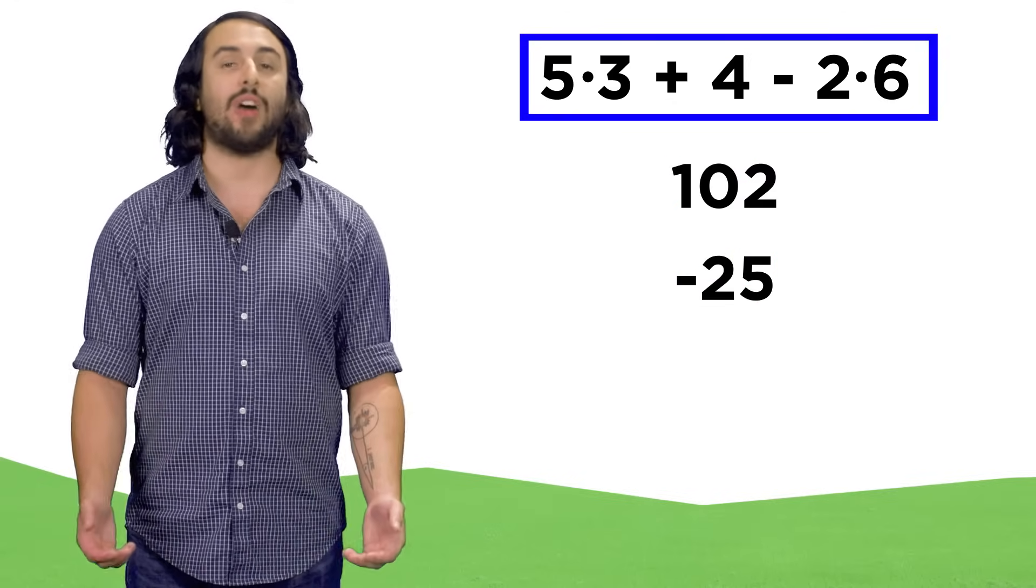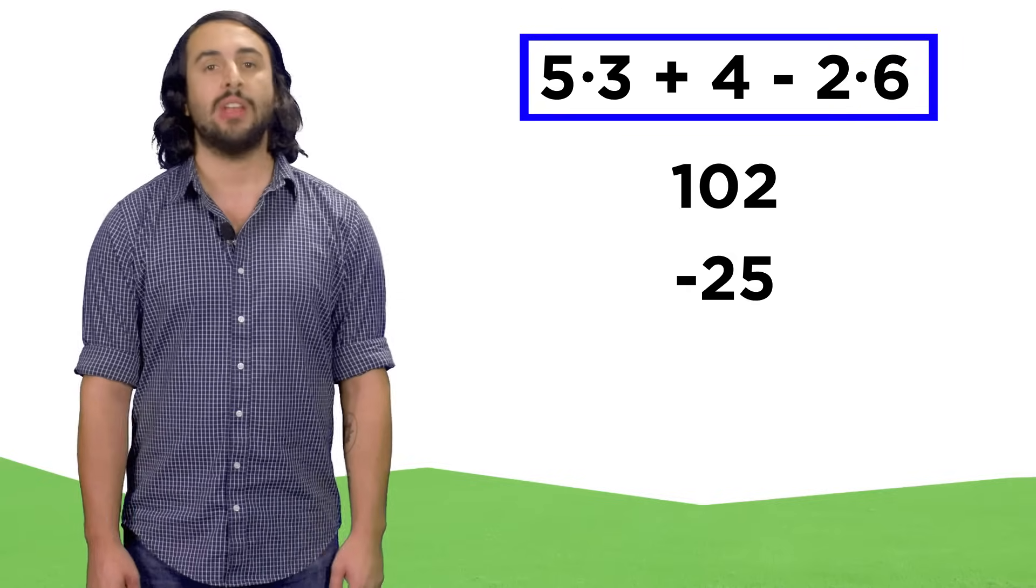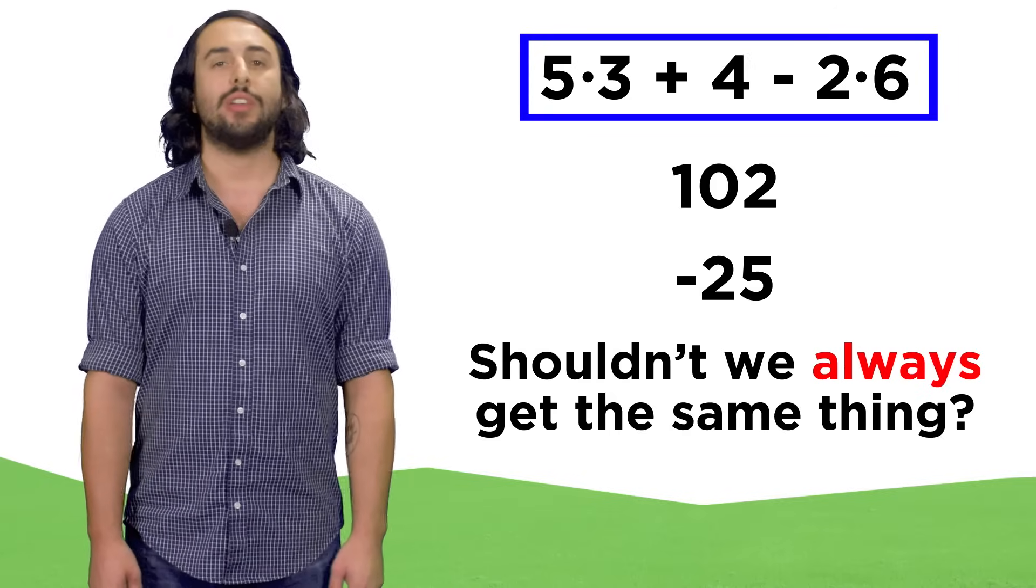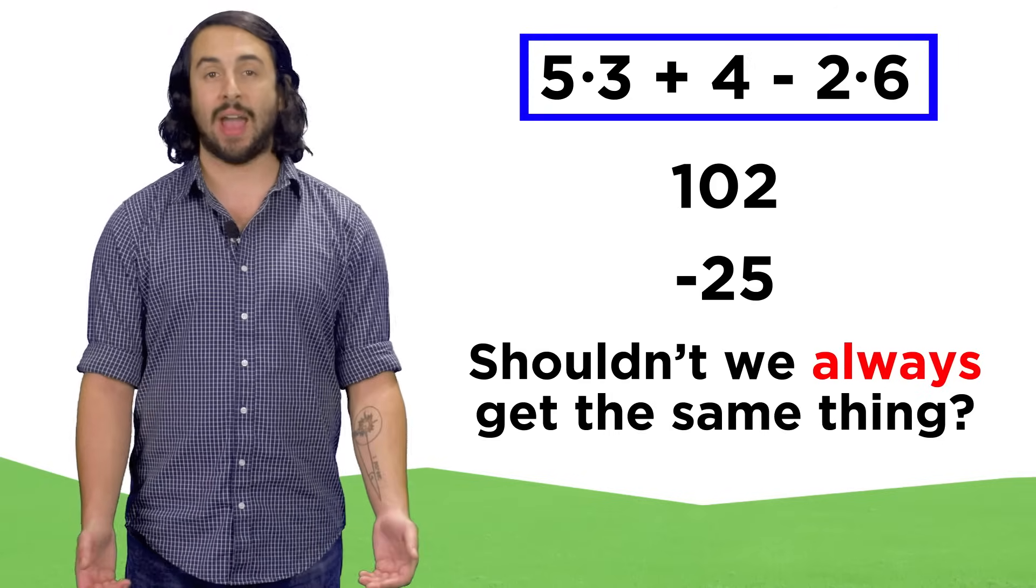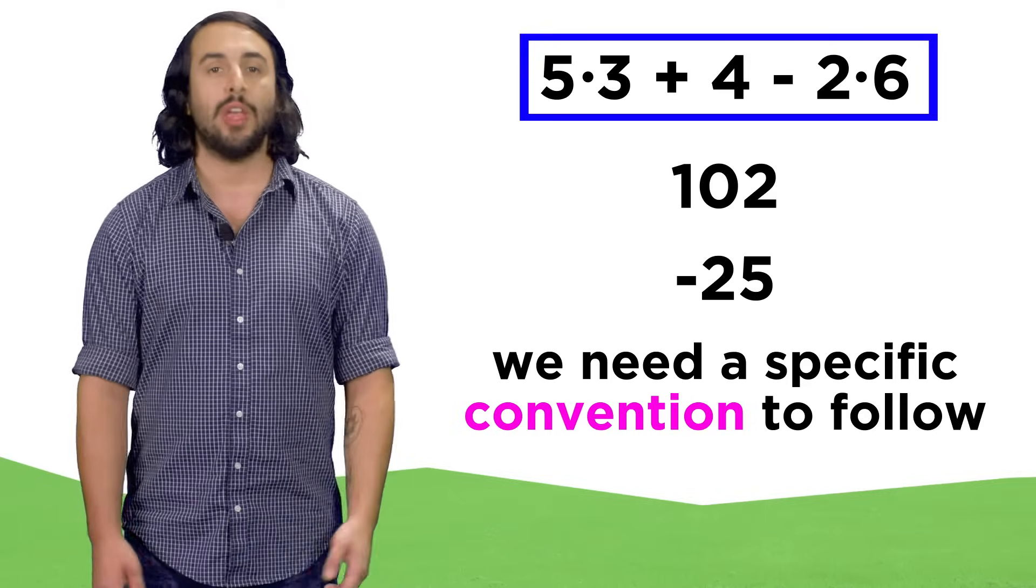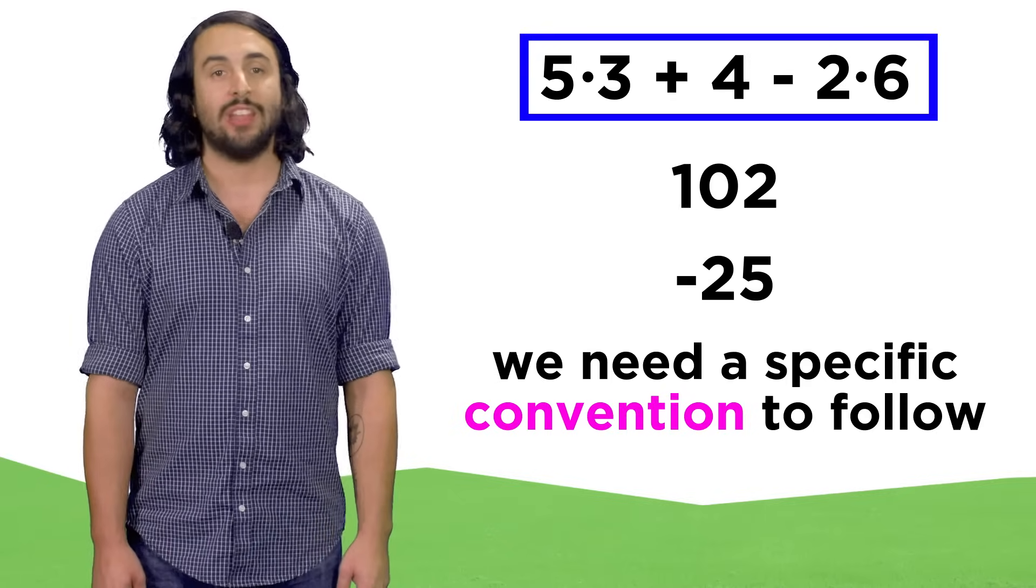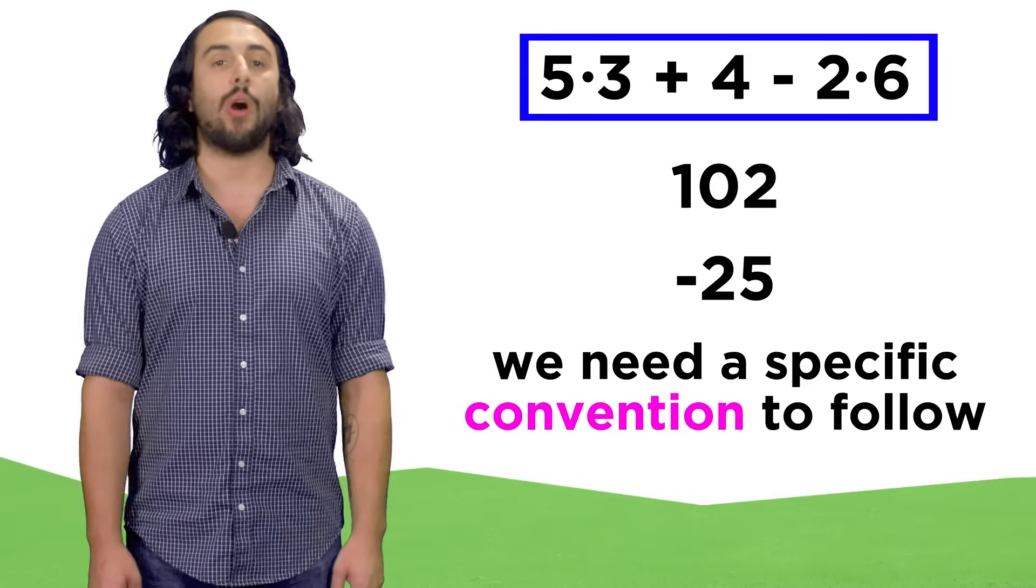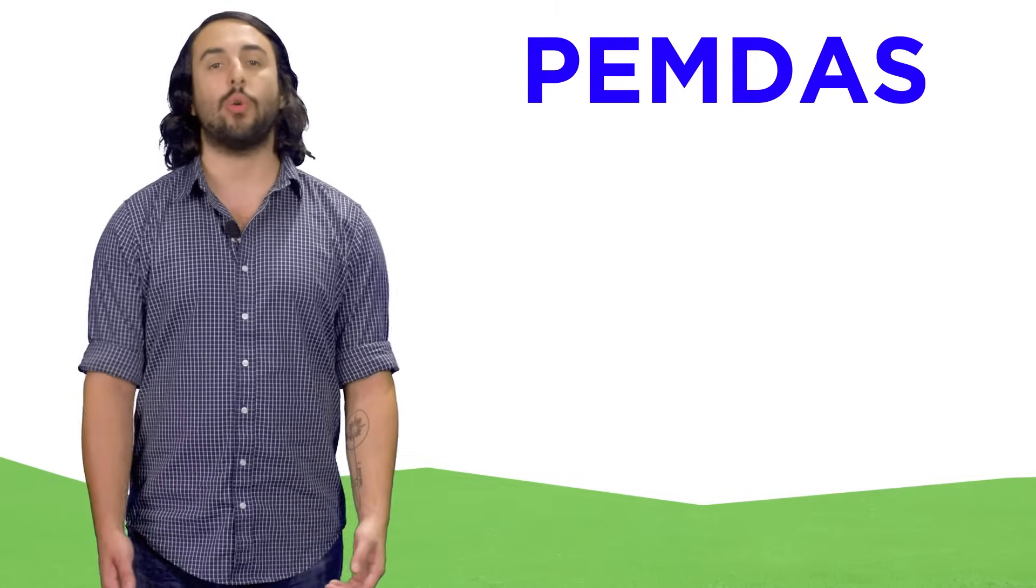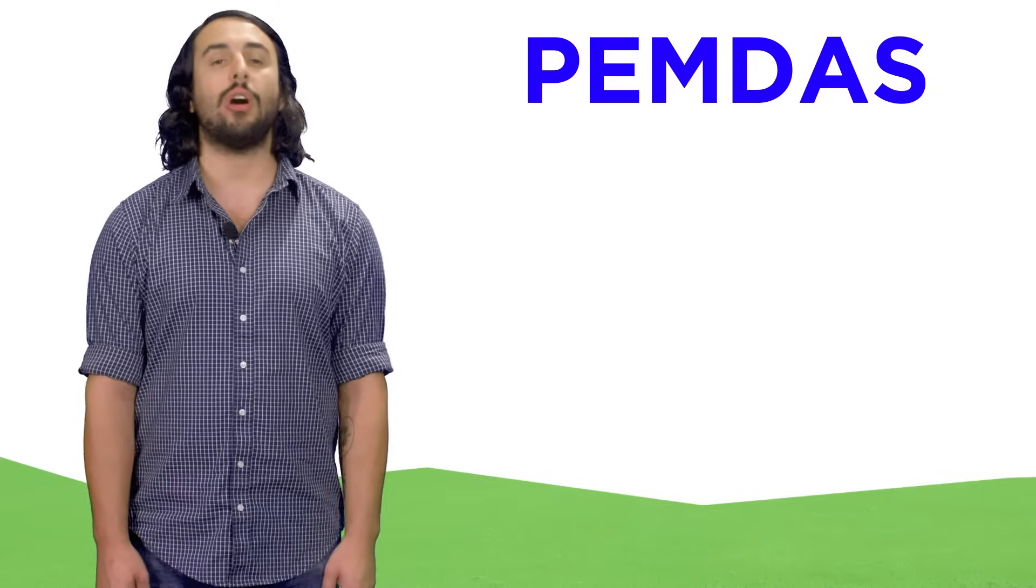Actually, there are plenty of other numbers we could get too, depending on which operations we do first. But shouldn't we all be doing the same math and getting the same answer? Since it's arbitrary where to start, we have come up with a convention that we all follow, so that we all get the same answer. This convention for the correct order of operations is called PEMDAS.